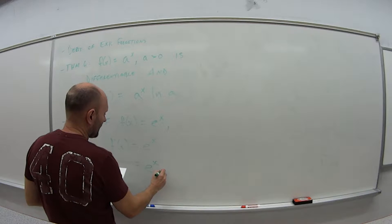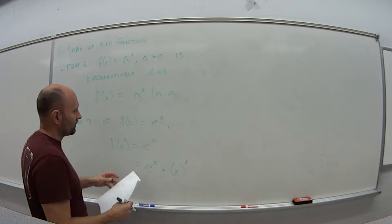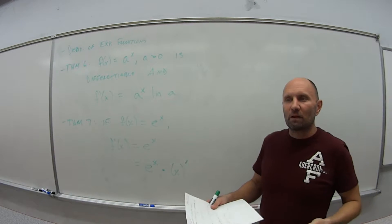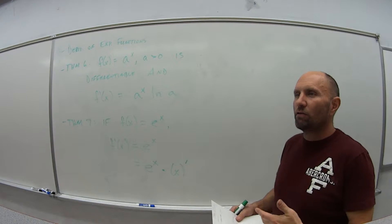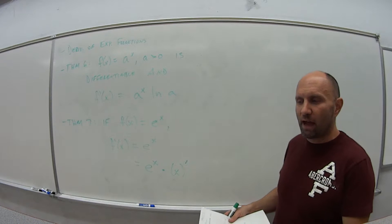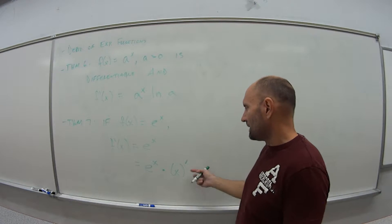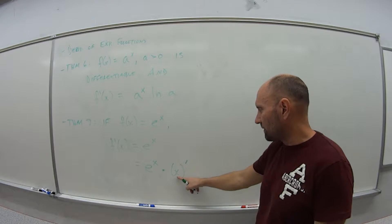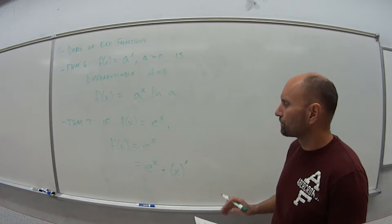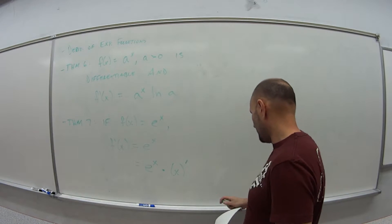Remember that with the chain rule, it's e to the x times the derivative of whatever the exponent is. So e to the x the derivative is e to the x, but if it was e to the 3x plus 9, we'd also have to apply the chain rule to the exponent piece. That's why the derivative of x being 1 simplifies things.